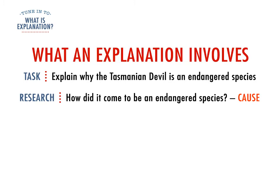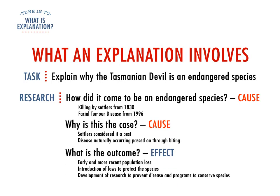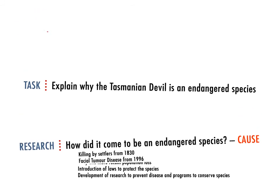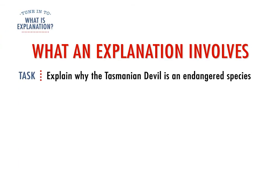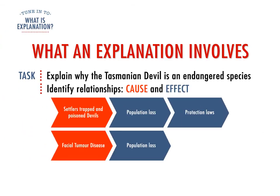The first thing to do is research some causes for the Tasmanian devil being endangered and the effects of this. You might find the causes of endangerment are the killing of Tasmanian devils by early settlers, and the more recent facial tumour disease. The first effect of killing by settlers was population loss and the introduction of laws to protect the species. The second effect of the facial tumour disease has been population loss and the development of research to try to prevent the disease and programs to conserve the species. You can also create a flowchart to map out the cause and effect relationships for each idea.